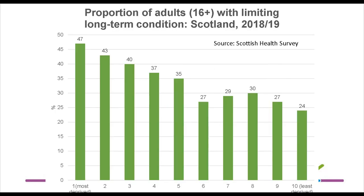The distribution of disabled families across Scotland is not even. Adults with a disability are more likely to be found in more deprived areas. In the most deprived parts of Scotland, almost half of adults aged 16 plus have a long-term limiting condition, whereas in the upper half of less deprived parts of Scotland it's between a quarter and a third — much lower.